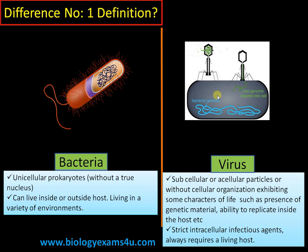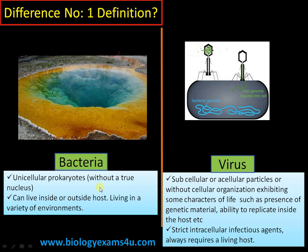Bacteria can survive anywhere on the planet. This is a hot spring where you can see Thermus aquaticus, a bacterium from which we isolate the enzyme Taq polymerase used in PCR (polymerase chain reaction). So bacteria can live anywhere — even in icebergs or hot sulfur springs. Bacteria can survive both inside and outside a host.